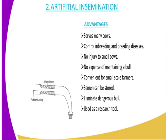Then we go to the second method of servicing animals, which is artificial insemination. In artificial insemination, the bull is brought to a teaser cow — a cow on heat. When the bull is about to insert the penis into the vagina, the penis is grasped and directed to an artificial manufactured vagina where the semen is collected.